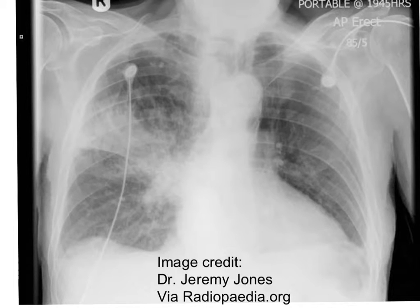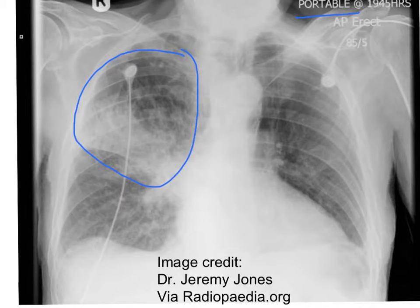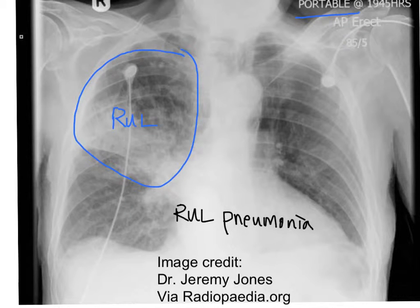In this patient with a portable chest x-ray, could you tell where the infiltrate is? The infiltrate is on the right side of the lung, in the right upper lobe. This is typical of a right upper lobe pneumonia.